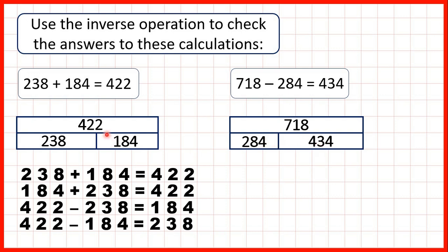So again like this one this bar model gives us four calculations. It tells us that 284 plus 434 should equal 718 because with bar models if we add the numbers on the bottom we should get the number on top and we can add in any order so it also tells us that if we start with this number and add this number we should again get 718.